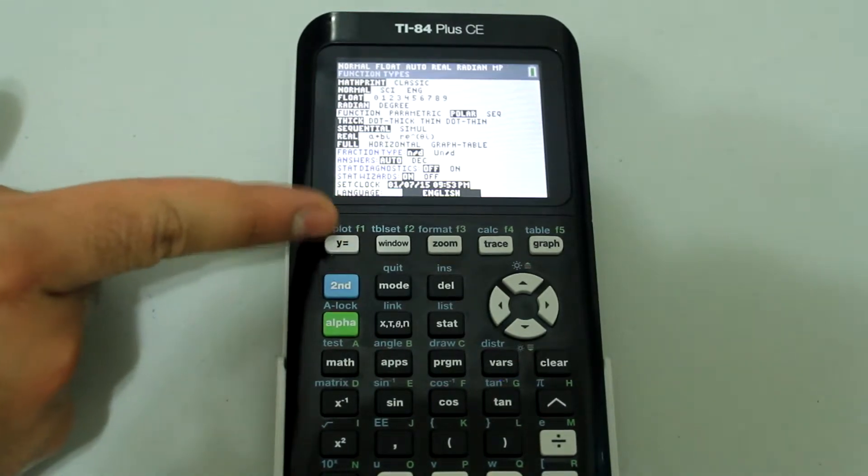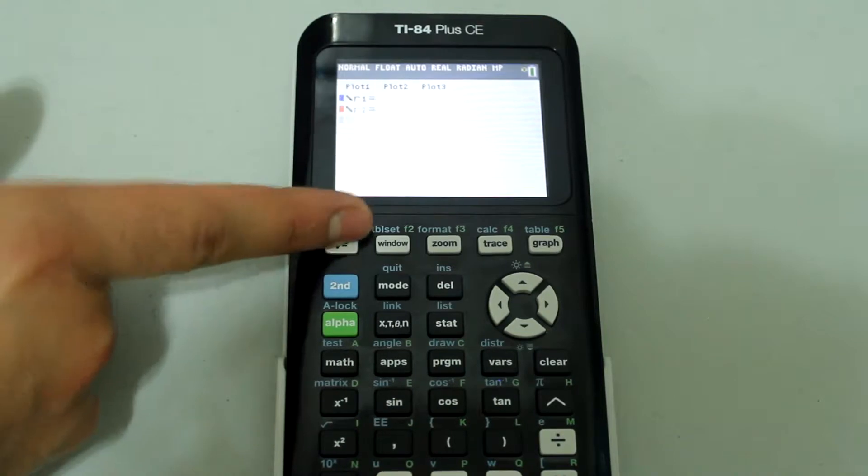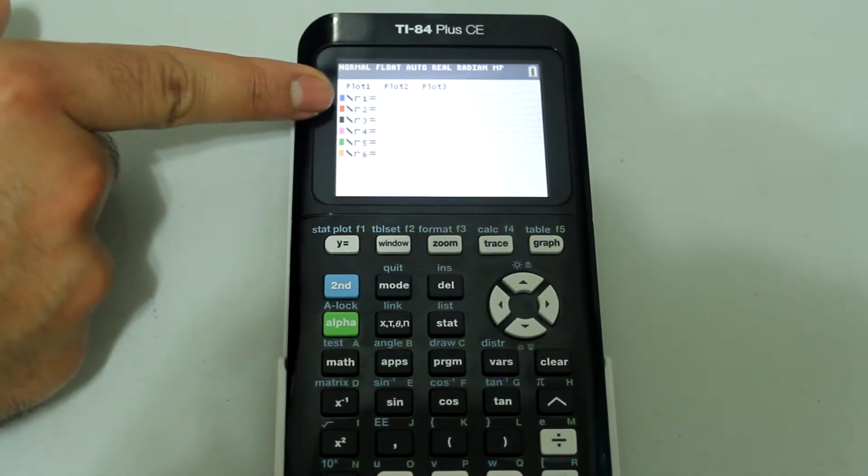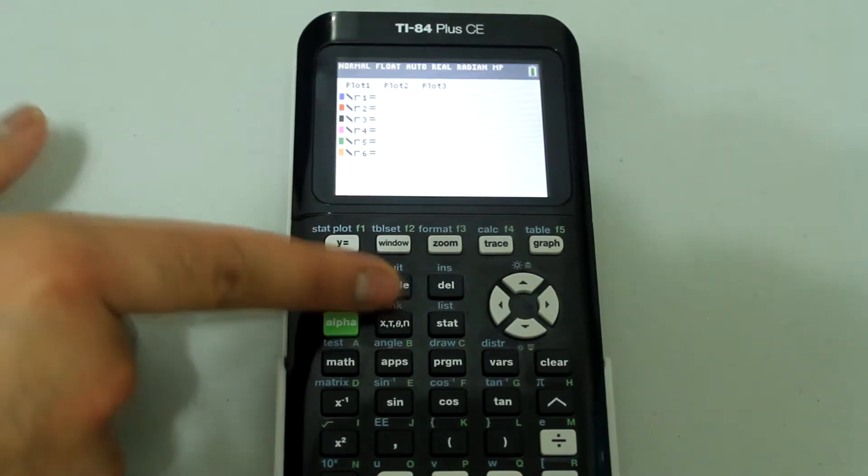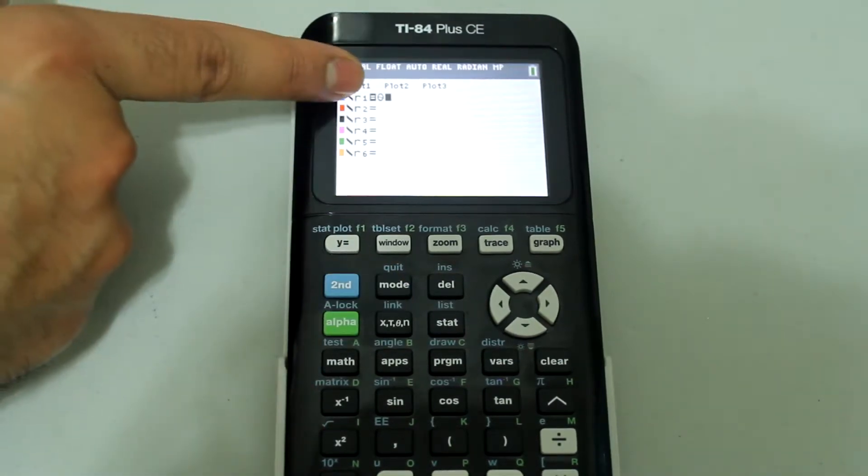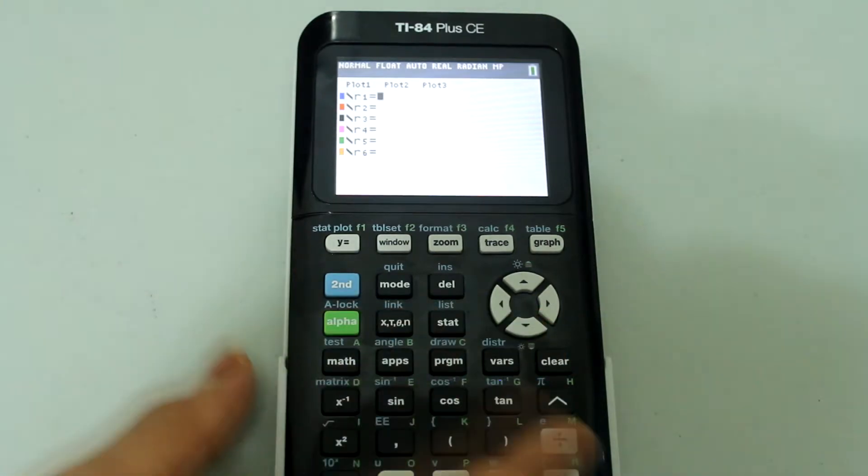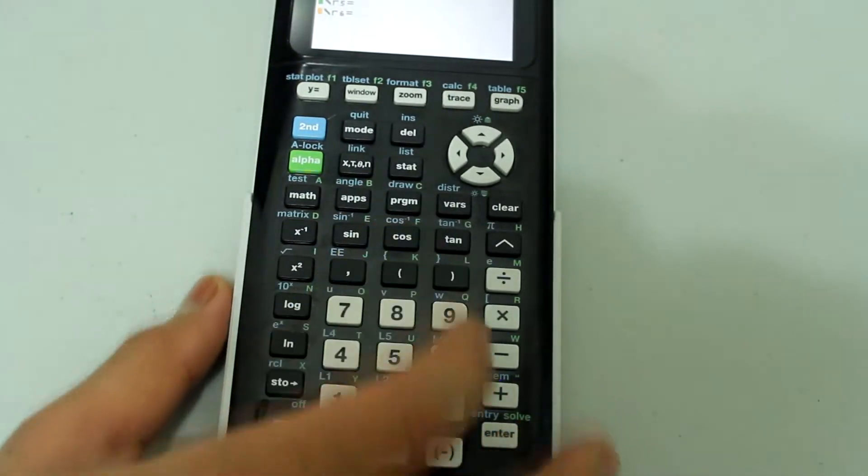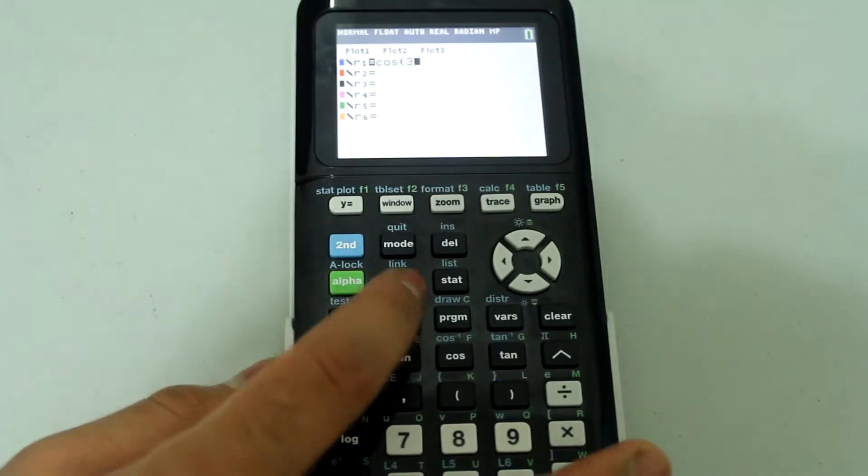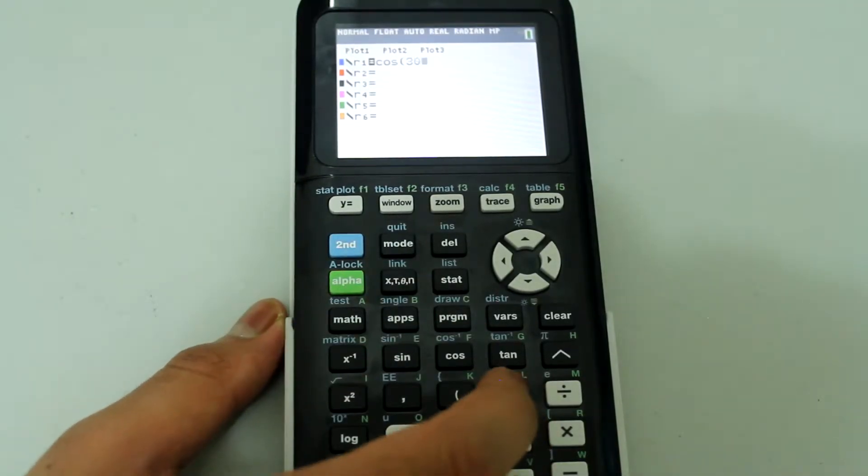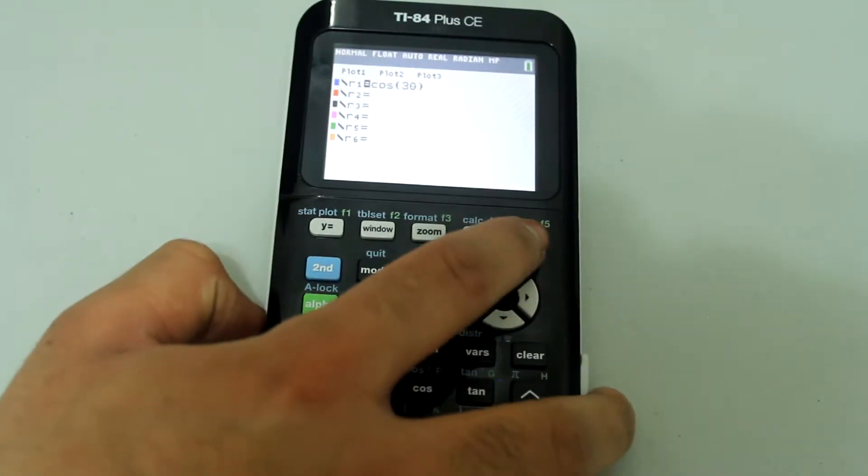So now we are going to go back to Y equals. Notice that we have R equals this time, and if we press this button we get inputs in terms of theta. Let's do cosine 3 and theta. Then close the parenthesis. Now press graph.